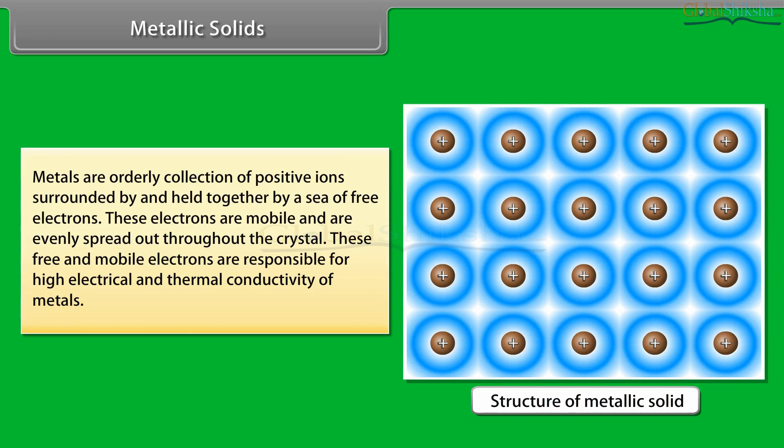Metals are orderly collections of positive ions surrounded by and held together by a sea of free electrons. These electrons are mobile and are evenly spread out throughout the crystal. These free and mobile electrons are responsible for high electrical and thermal conductivity of metals.